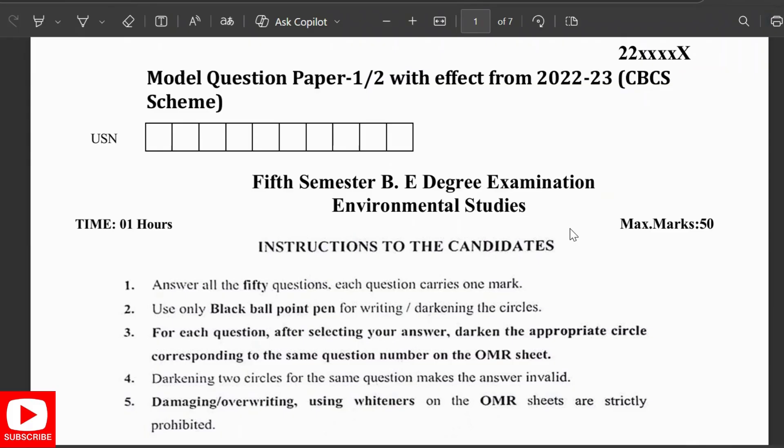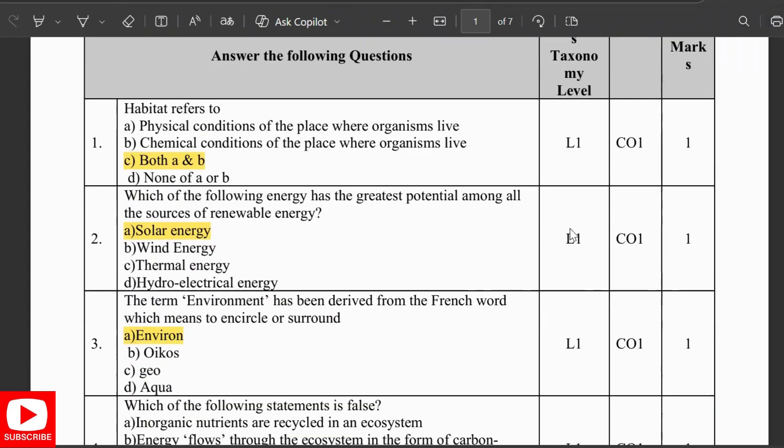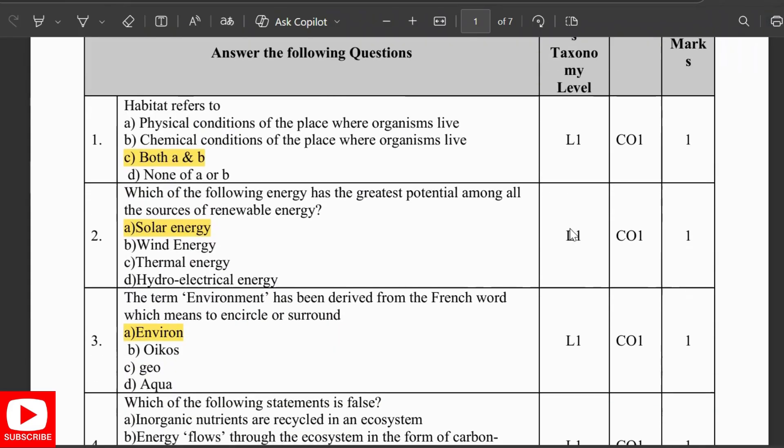Habitat refers to both A and B, that is physical conditions of a place where organisms live and the chemical conditions of the place where organisms live. Which of the following energy has the greatest potential among all the sources of renewable energy? Solar energy. The term environment has been derived from the French word which means to encircle or surround, that is environ.